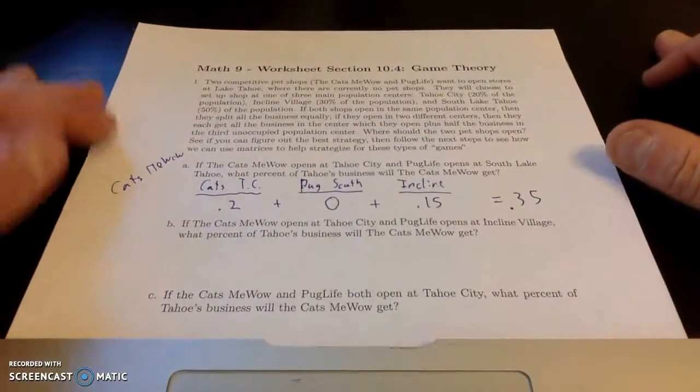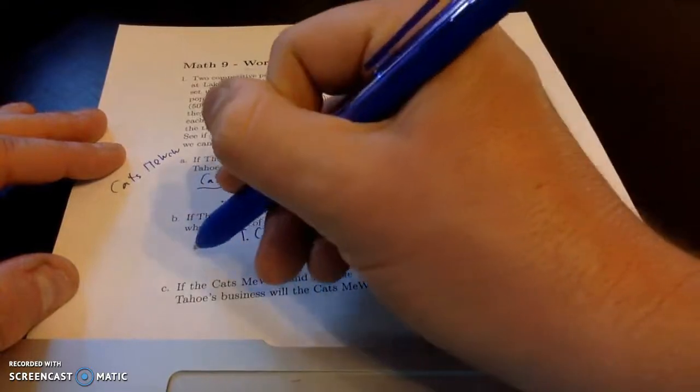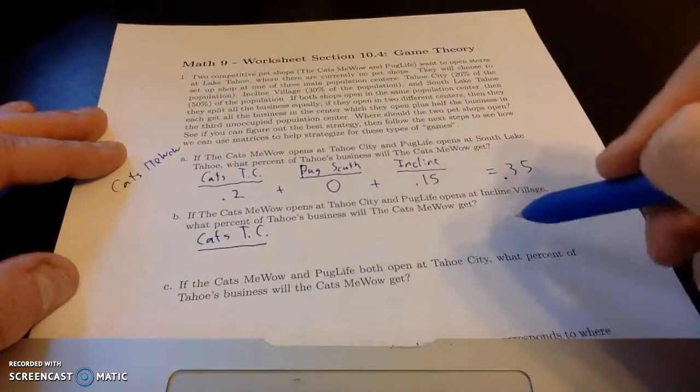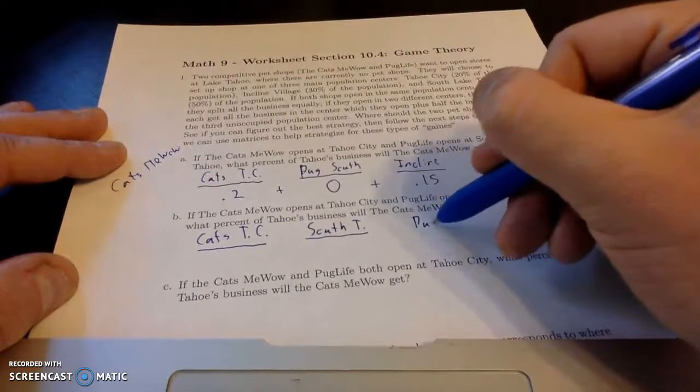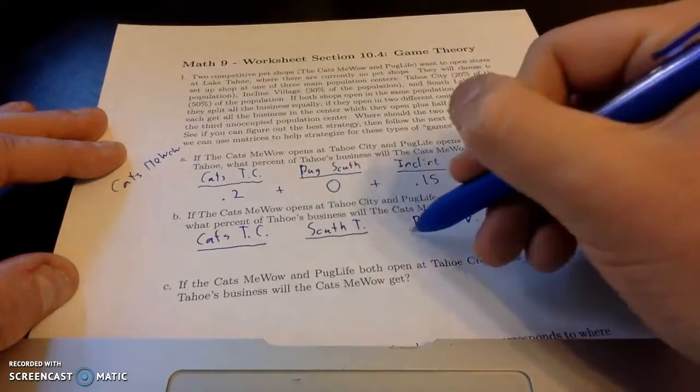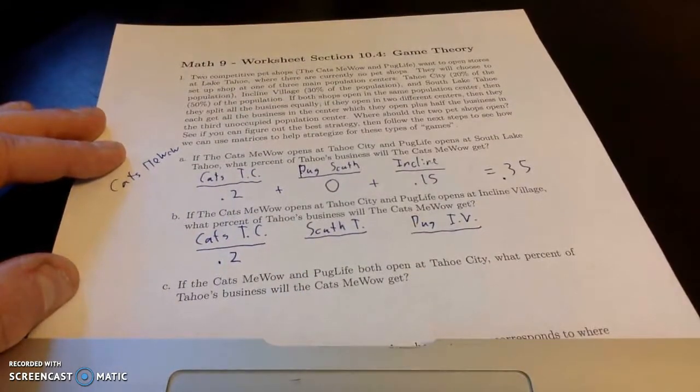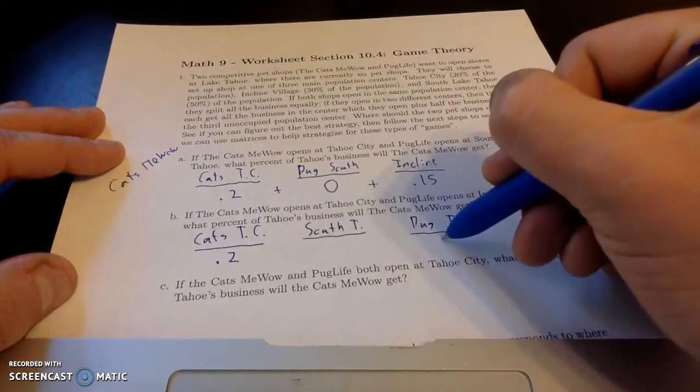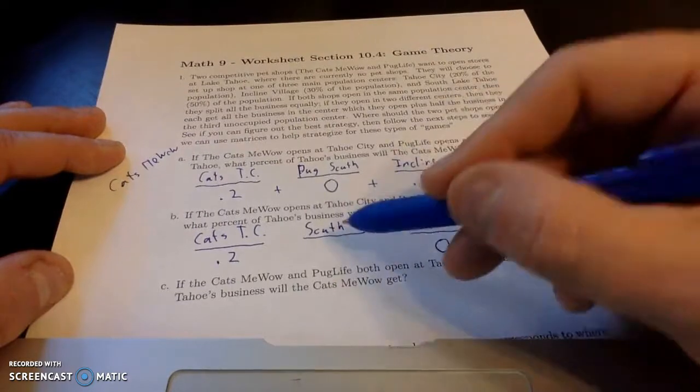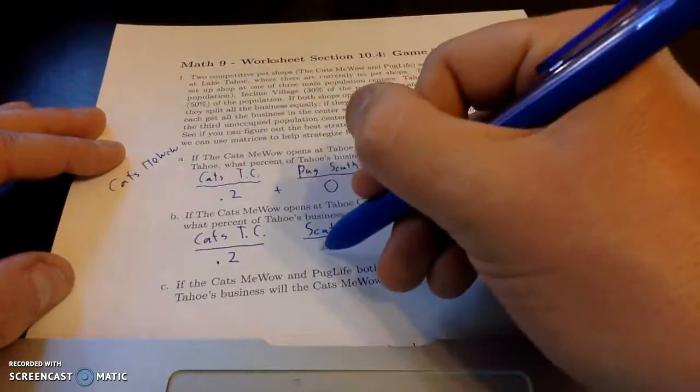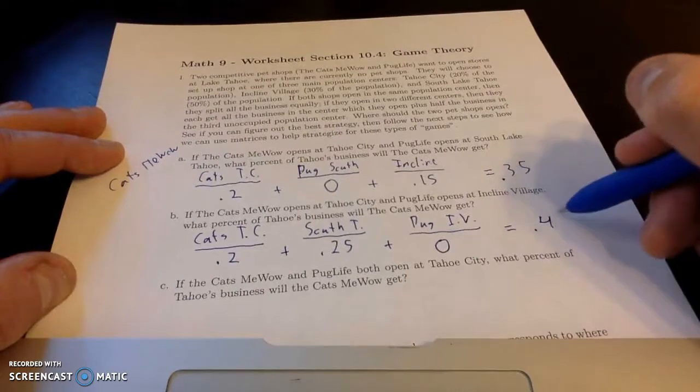Alright. Let's look at a couple more scenarios. What if Cats Meow opens in Tahoe City? So that's the same scenario. But now we're going to have Pug Life opens at Incline. So no one is in South Tahoe. And we have Pug Life in Incline Village. We've got the same thing. Cats Meow gets all 20% of Tahoe City. Pug Life gets all of Incline Village. So we're looking for what Cats Meow share. So they get zero of Incline. And now they're going to split South Tahoe. South Tahoe has 50% of the population. So Cats Meow gets half of that. 25%.